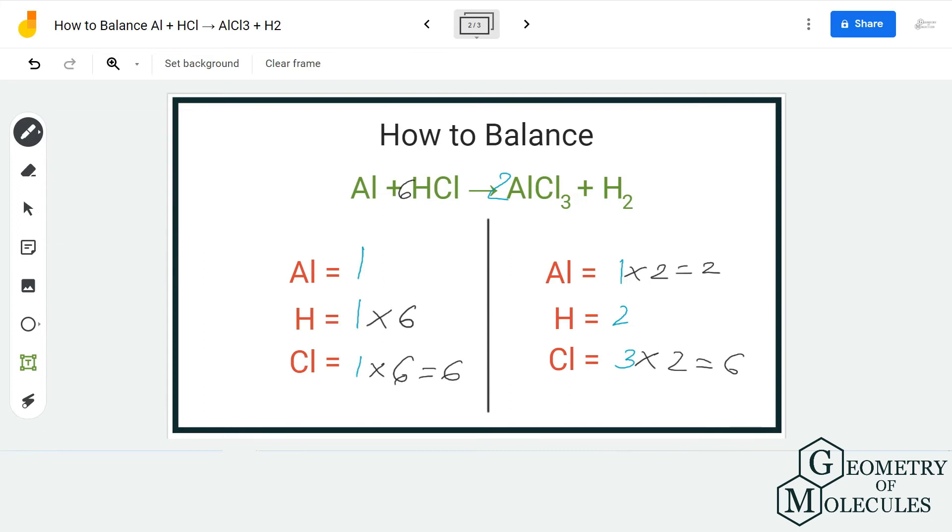I'm going to add coefficient 3 on the product side so that we have six hydrogen atoms there as well. Now if you look at this equation, the number of atoms of hydrogen and chlorine are balanced.